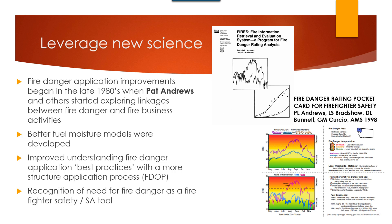Other things have changed as well — the applications themselves have improved. Fire danger applications in the late 1980s, when Pat Andrews and others started exploring linkages between fire danger and fire business activities, were very primitive. Now they've evolved into new tools like Fire Family Plus for being able to explore historical variations in fire danger and their association with fire activity. We know that lots of things have improved in terms of how we model fuel moistures, and our understanding of best practices has really improved — including the ability to consolidate all of this information into a fire danger operating plan that says how we use fire danger on a local unit.